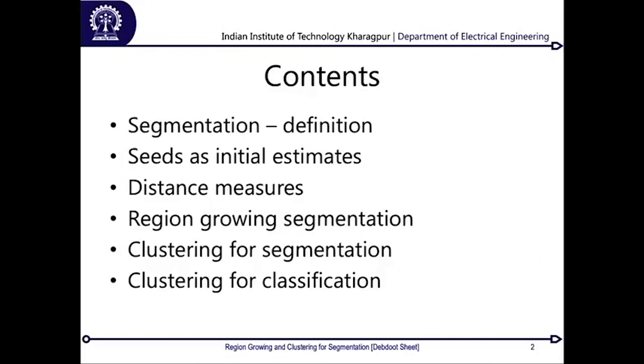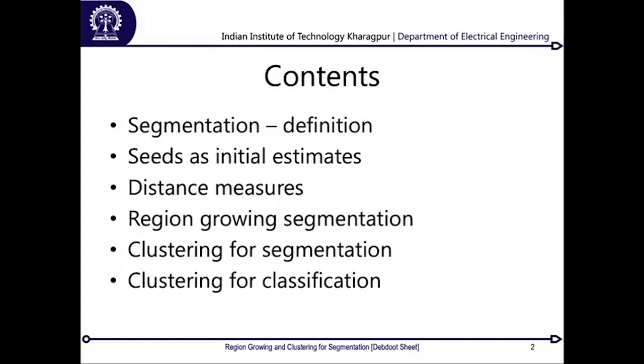This lecture is organized as follows: I start by defining what segmentation is in terms of its mathematical and set-theoretic definition, so you have a clear understanding of what we mean by segments and what the characteristics of a segment are. From there, since we are looking into region growing based segmentation — which is a semi-supervised or user-initiated segmentation method — it starts with some initial estimates of what a region is and what pixels are going to define a region, called a seed.